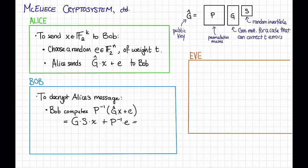And another way of writing that is G times, in parentheses, S times X plus E prime, where E prime is some vector of weight T. That's because we got E prime by just permuting the coordinates of E and E had weight T to begin with.